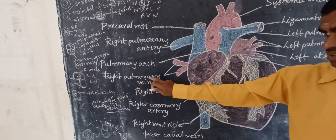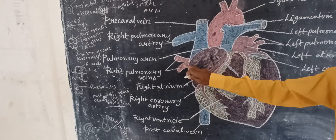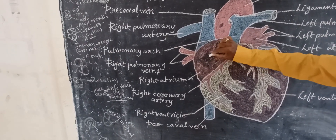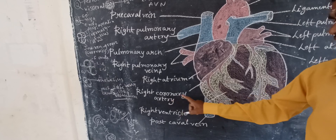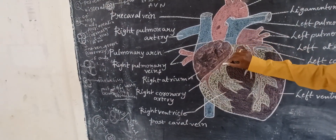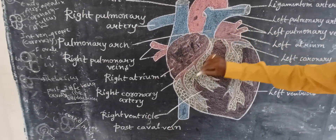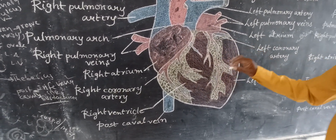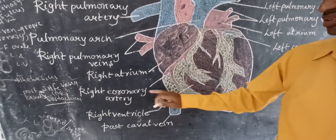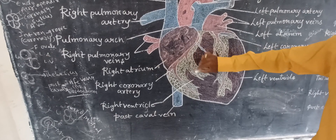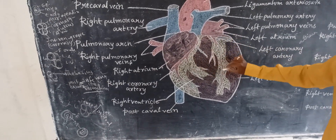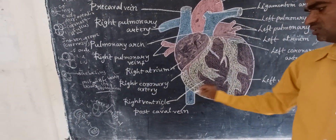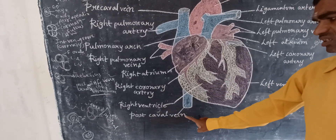The right pulmonary veins carry oxygenated blood. The right coronary arteries are forming from the anterior part of the atrium through the posterior part of the ventricles, extending to cover all the ventricles. This is the right ventricle, and this part is the postcaval vein.